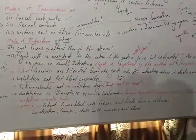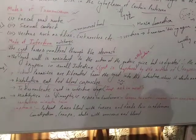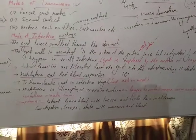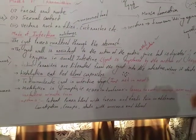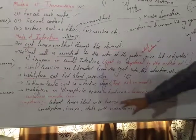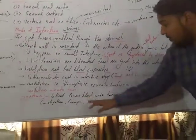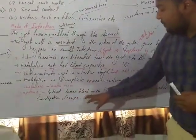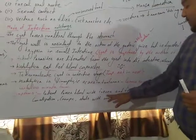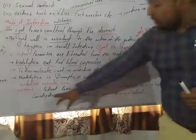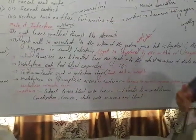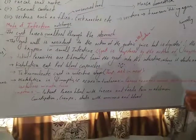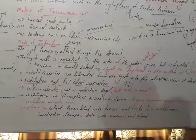Symptoms of amoebiasis include the patient passing blood with feces, releasing mucus, experiencing abdominal pain, and abdominal cramps. The patient passes blood with feces and feels pain in the abdomen. There is also constipation — the food is not digested and not excreted from the digestive tract via the anus. Stool is passed with excess mucus and blood clots.